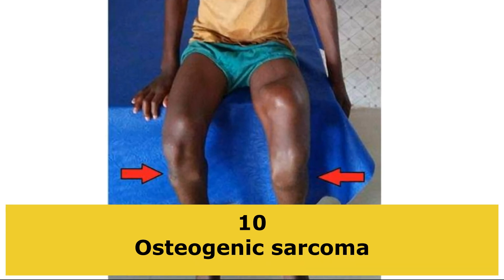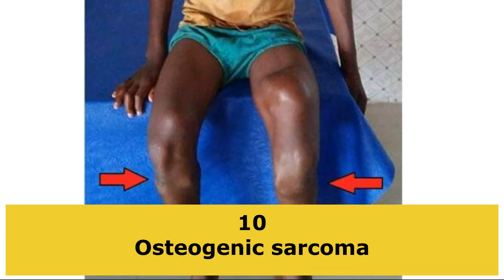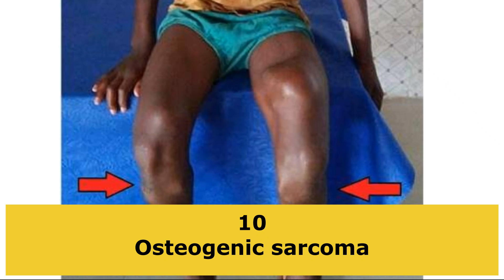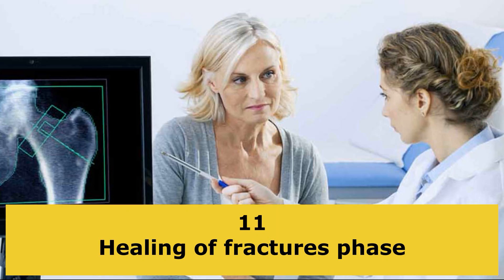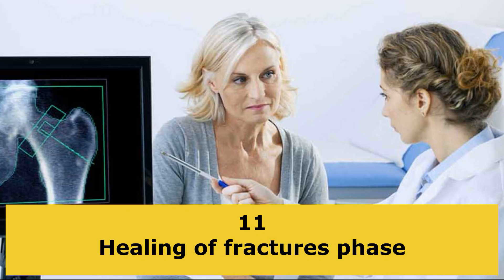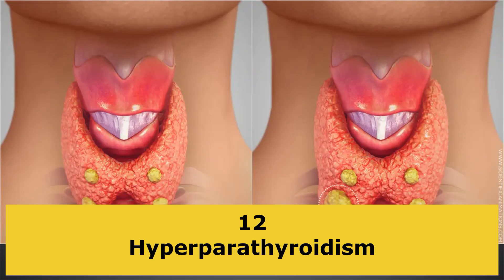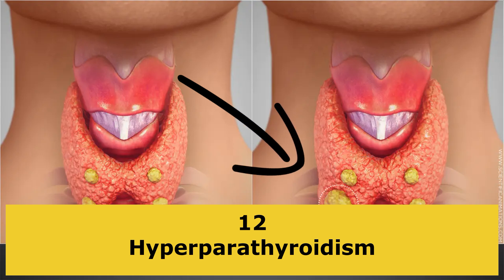Osteogenic sarcoma. This is a type of cancer that starts in your bones. Healing of fractures phase. Hyperparathyroidism. This occurs when your parathyroid glands produce too much parathyroid hormone, which causes calcium levels in your blood to rise.